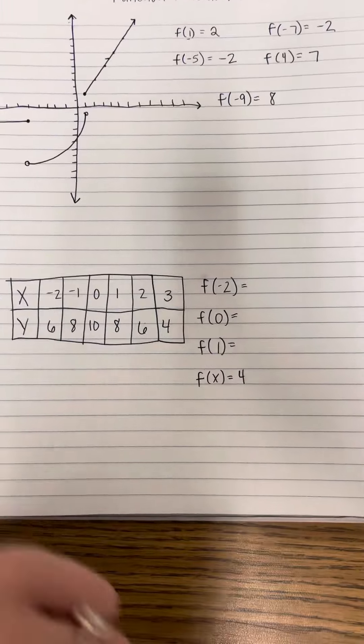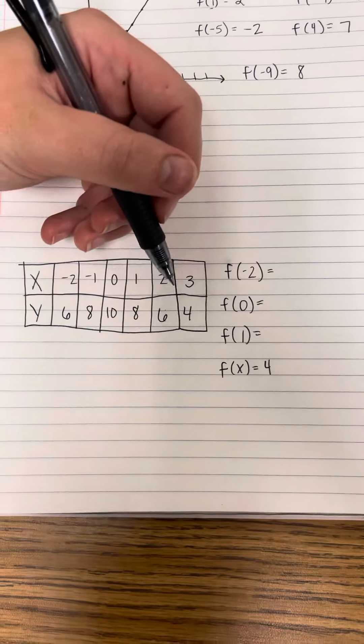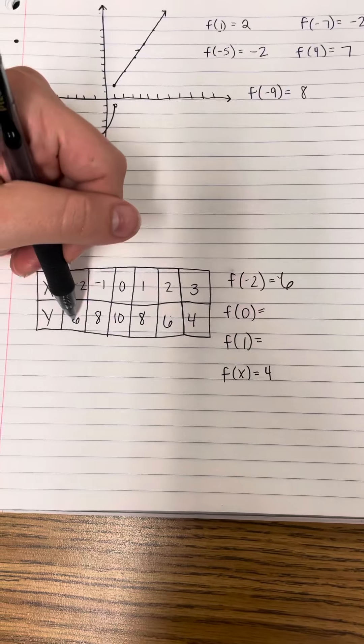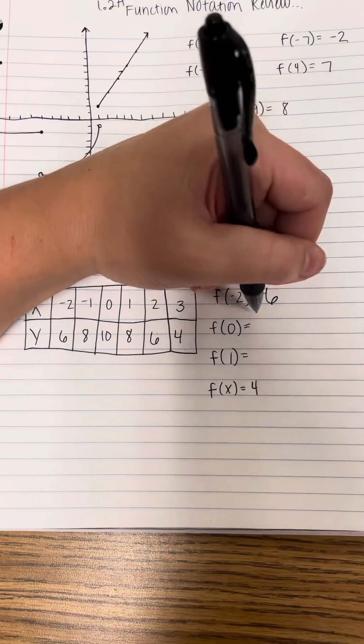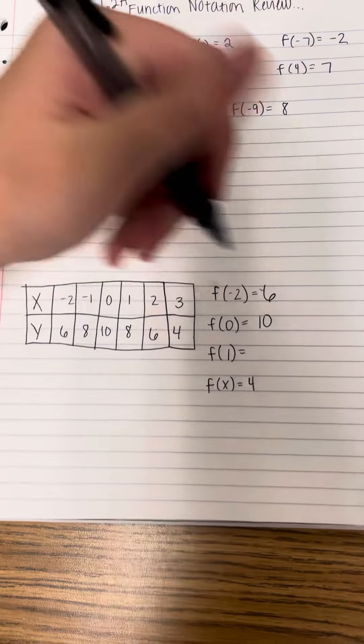All right. Table is going to be quite a bit easier. So the x values are on top and the y values are on the bottom. So when x is negative 2, y is 6. When x is 0, y is 10. When x is positive 1, y is 8.